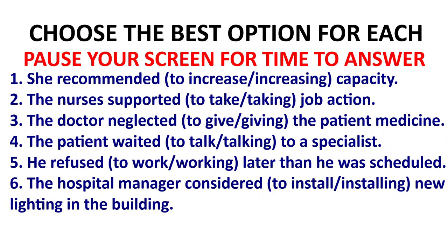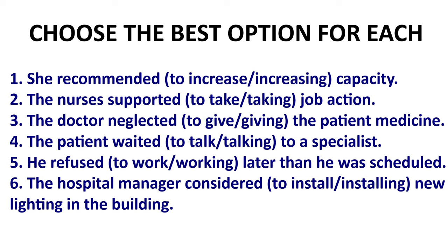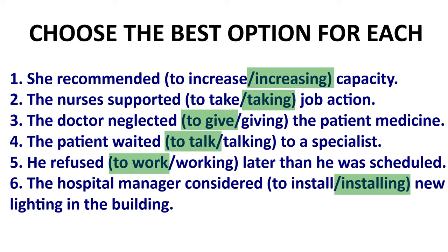Pause your screen and think about which word sounds better in the brackets. Number one: increasing — recommend is followed by -ING, not to-verb. Number two: taking. Number three: to give. Number four: to talk. Number five: to work. Number six: after 'consider,' we don't use the to-verb — we use verb -ING. So: the hospital manager considered installing new lighting in the building.